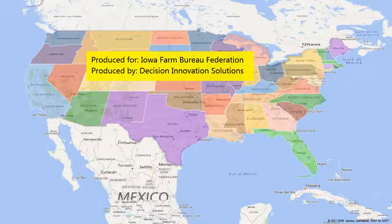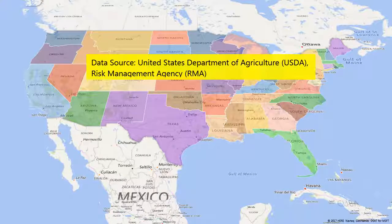Hello, thank you for joining us for a brief presentation produced for the Iowa Farm Bureau by Decision Innovation Solutions. The purpose of this presentation is to visually show, over time, how corn, soybean, wheat, and cotton crop insurance has performed across the United States. We will show this performance in terms of indemnities and loss ratios. Annual data comes from the United States Department of Agriculture Risk Management Agency.